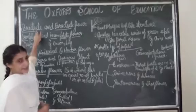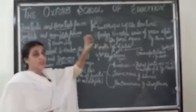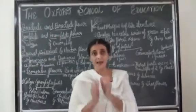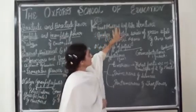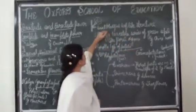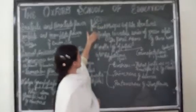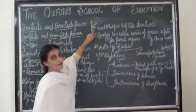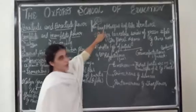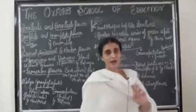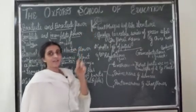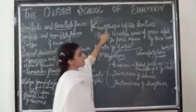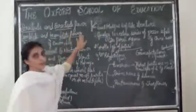First is bracteate and ebracteate plants. Before starting, I would like to tell you the meaning of bract. A bract is a modified leaf-like structure which is present near the flower. You may see in this diagram — a leaf-like structure is present at the base of the flower. This is known as a bract. If a flower has a bract, it is known as a bracteate flower. If a flower lacks this leaf-like structure, it is known as an ebracteate flower.